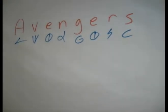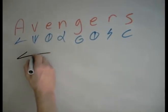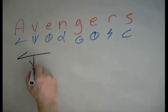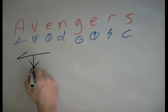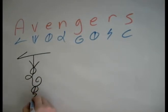Let's try to do the word Avengers in Descript now. Let's start with the simplest possible combination. So we've got A, V, E, N, G, E, R, S. Avengers.